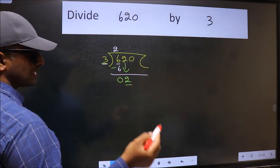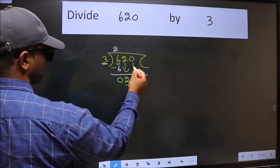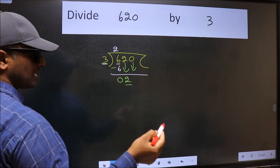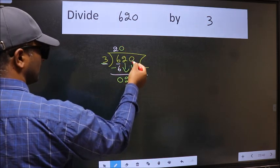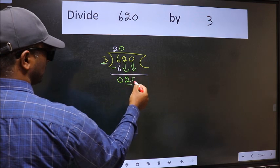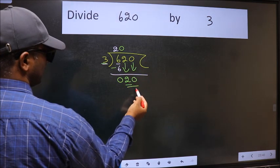So, we should bring down the second number. And the rule to bring down the second number is, we should put 0 here. Then only we can bring this number down. Now, 20.